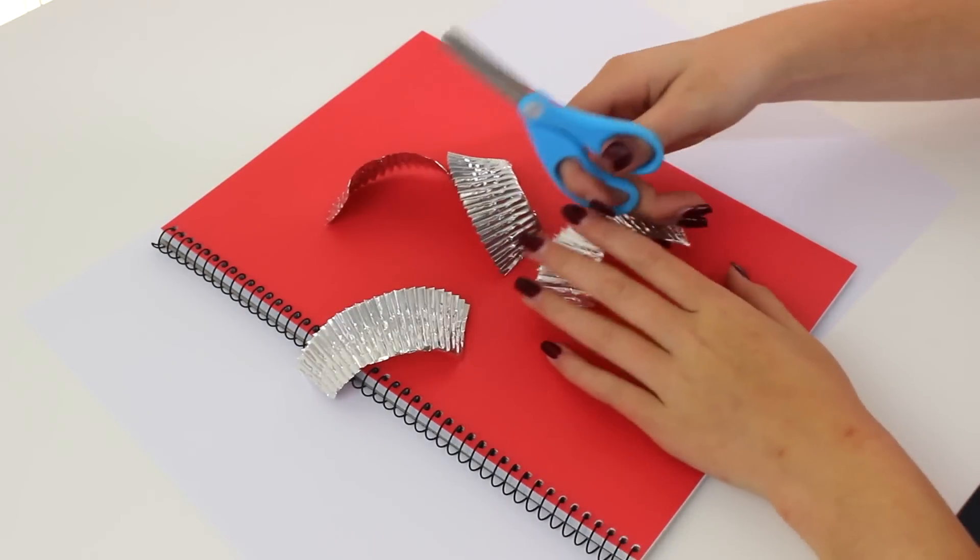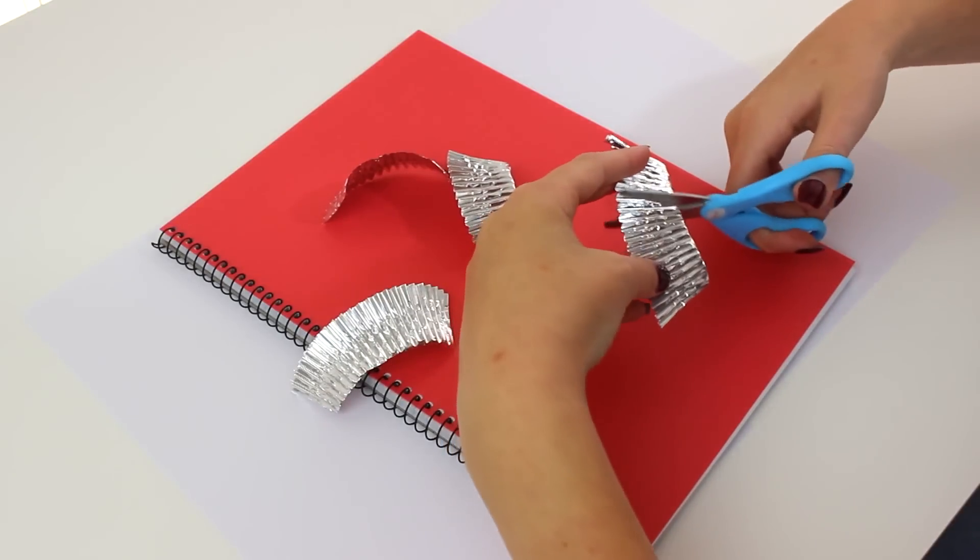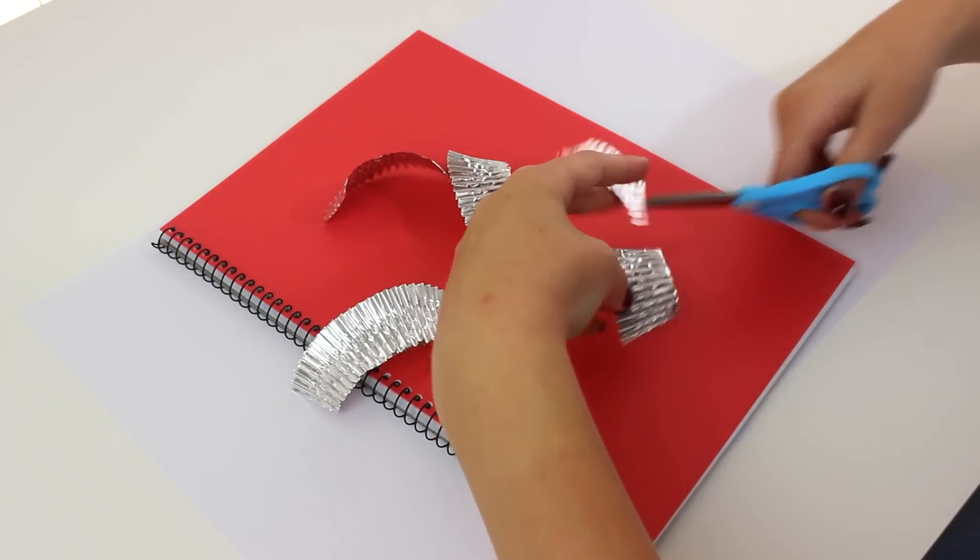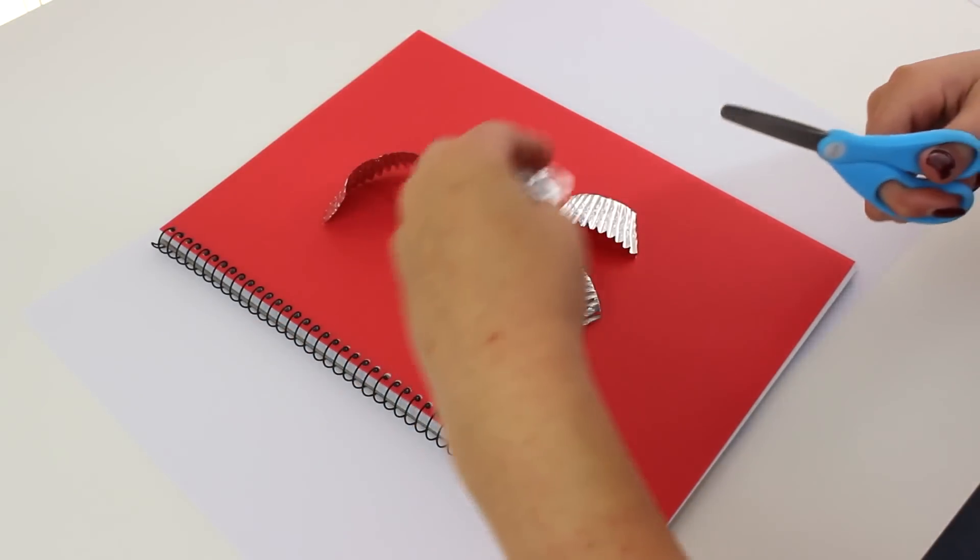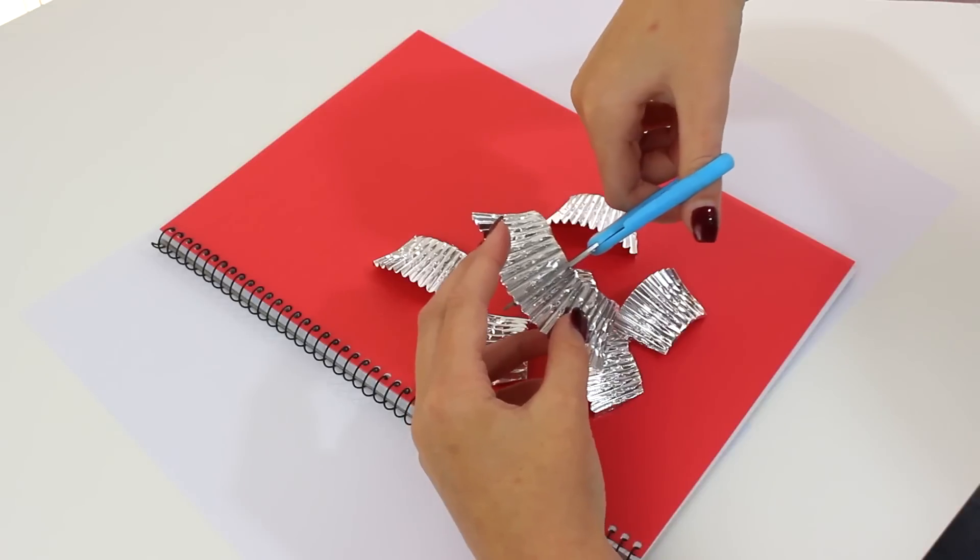I was originally just going to do one big cupcake but I thought that'd look a bit weird, so I decided to do a couple of small cupcakes. Just cut your patty pans in half to whatever size you would like them to be. I just cut them straight down the middle so they were kind of smaller cupcakes.